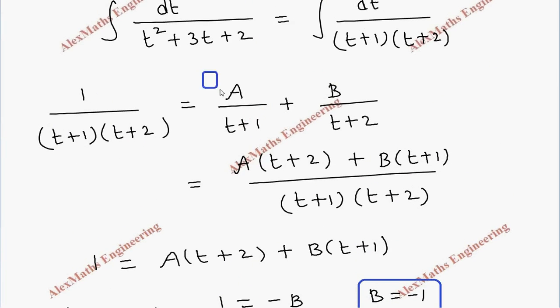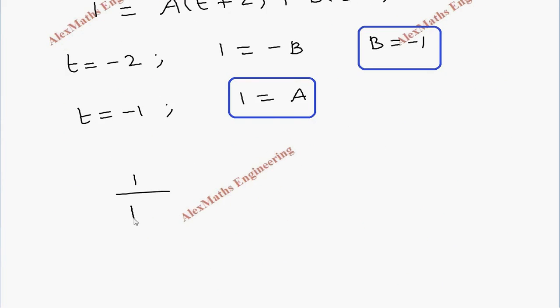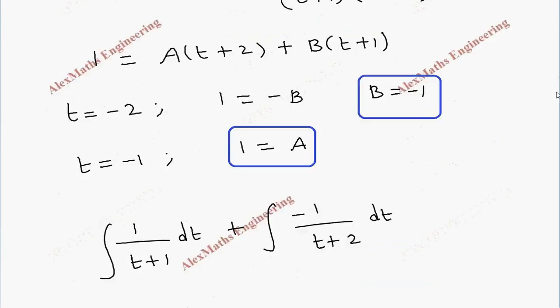So A by t plus 1, which is 1 by t plus 1, integral dt, then plus integral minus 1 by t plus 2 dt. So we apply the value of B, denominator is t plus 2.